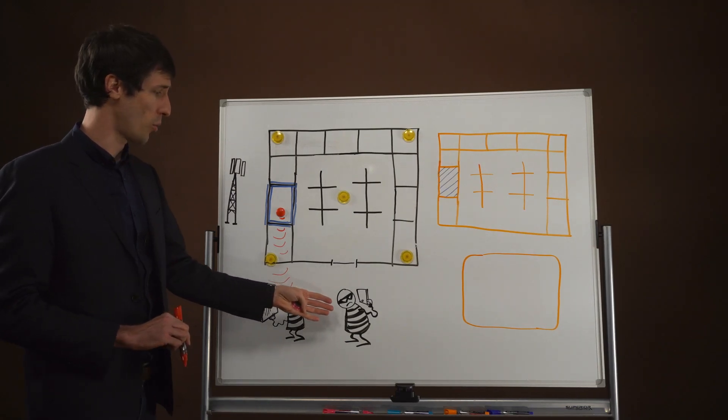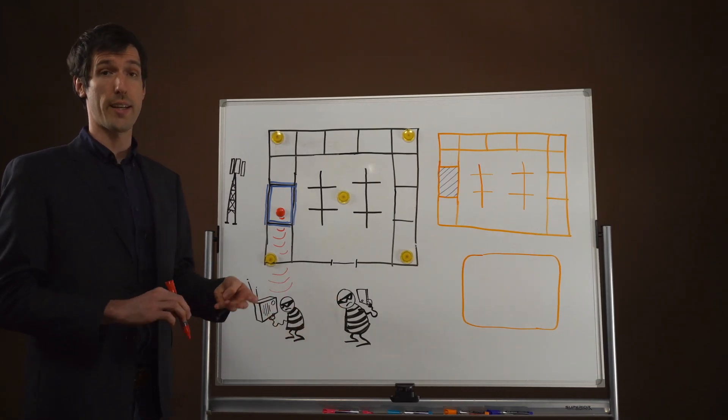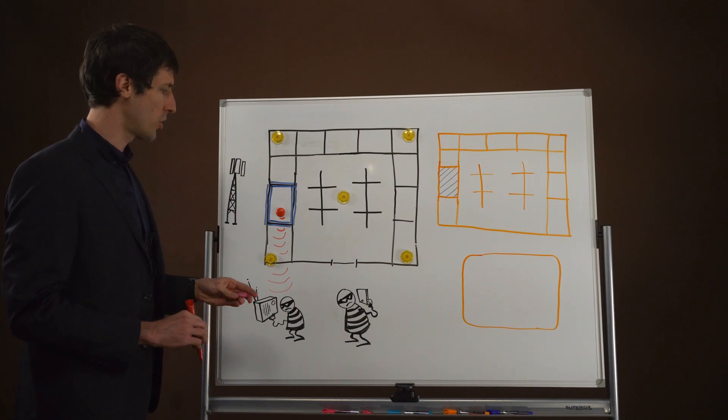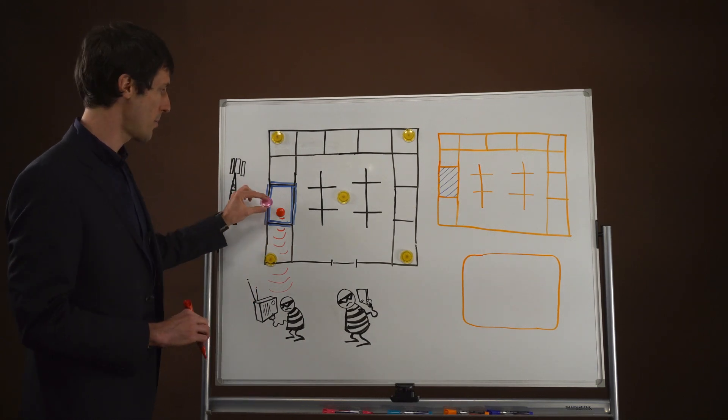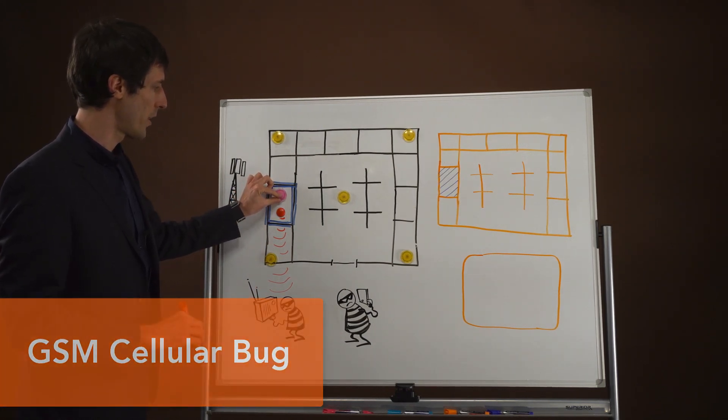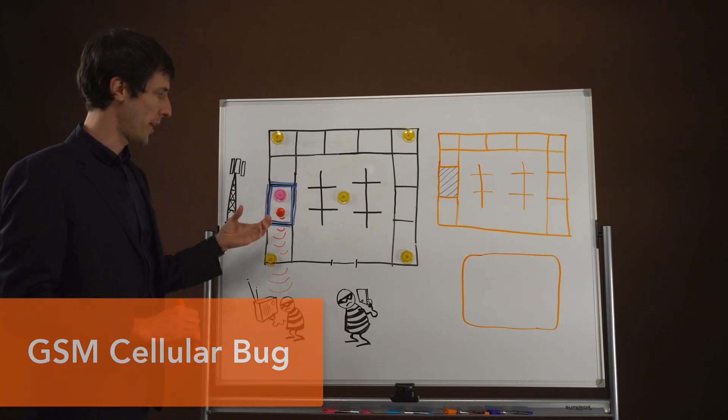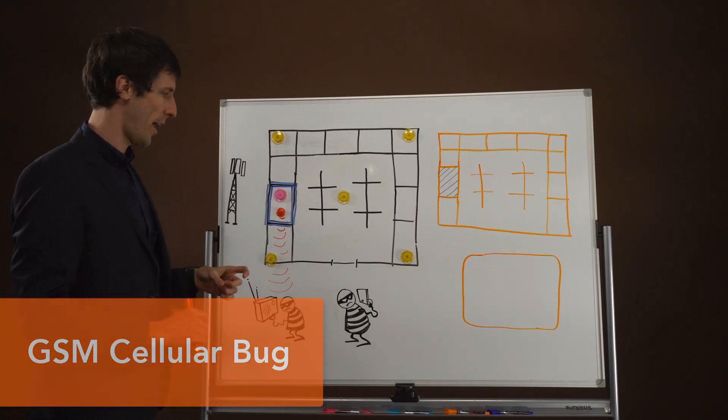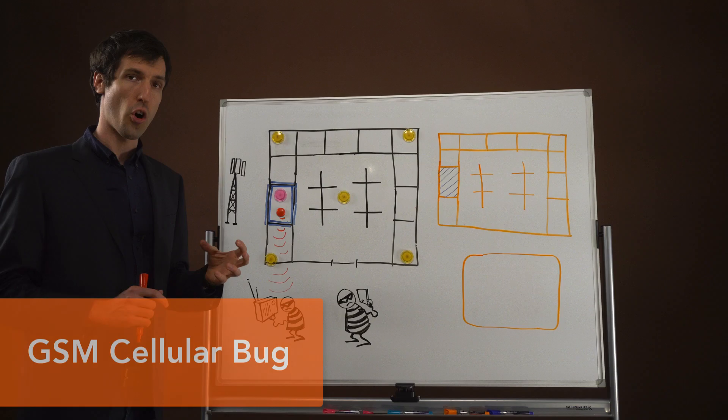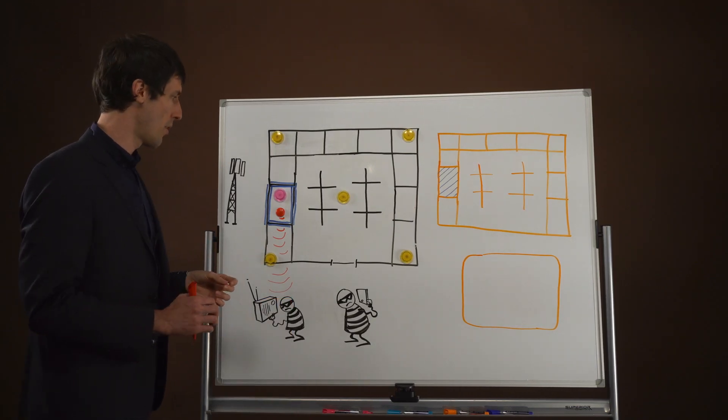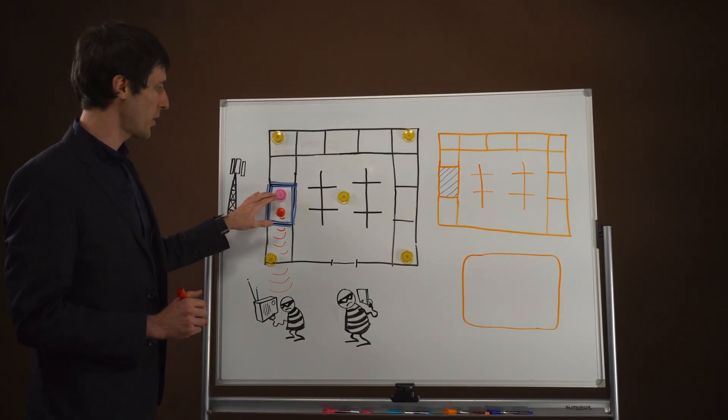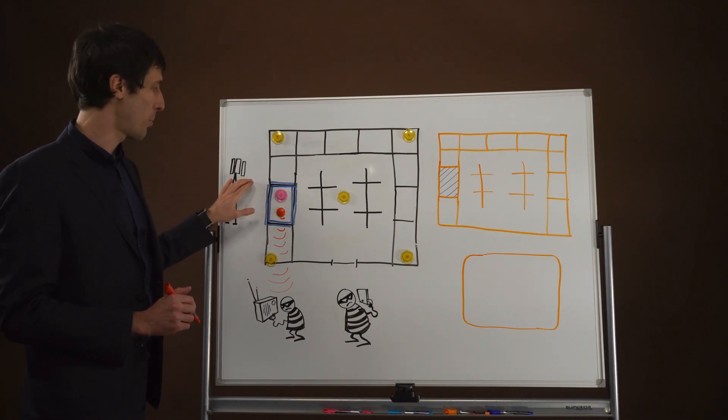If an attacker wants to be a little bit further away, in fact anywhere in the world, they can use a different sort of bug, a GSM cellular bug. It can be similarly placed out of the way, out of sight. They're very compact and quite cheap, available online. They will actually communicate using a normal cell operator's tower.